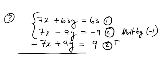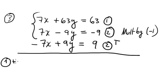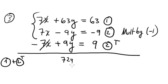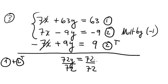After adding equation 1 plus equation 2 transformed, the x terms cancel out. We get 63y plus 9y equals 72y, and on the right-hand side we have 72. Dividing both sides by 72, y equals 1.